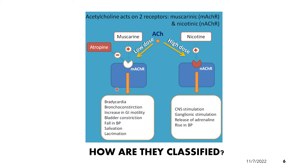At a low dose, acetylcholine produces the following effects: in the heart, there is a slowing of the heart rate, or bradycardia; there is also a fall in blood pressure; in the lungs, there is bronchoconstriction; in the GIT, there is an increase in GI motility; and in the salivary gland and lacrimal gland, there is salivation and lacrimation.